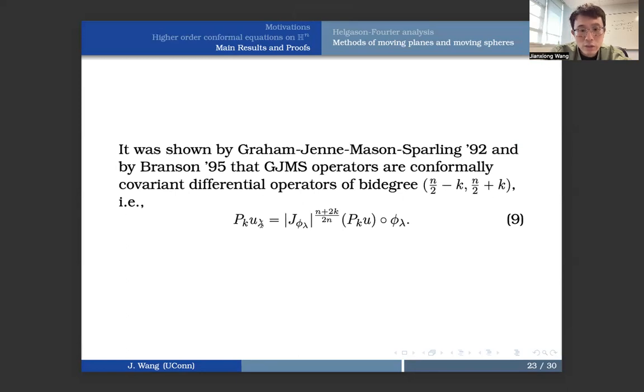Let's go back to the GJMS operator. This actually was first discovered by Graham Jenne Mason Sparling in 1992, and by Branson in 1995, that the GJMS operators, they are conformally covariant with bi-degree n over 2 minus k and n over 2 plus k, so that if you have a conformal change, it must follow this transformation law.